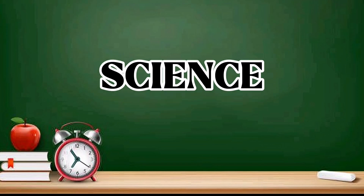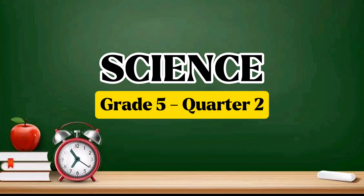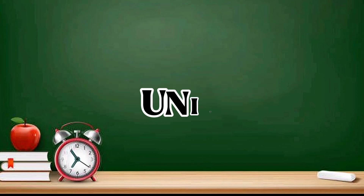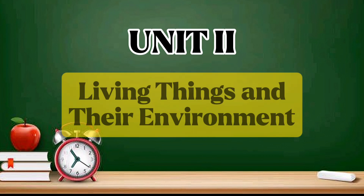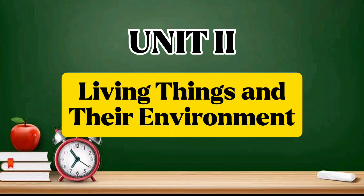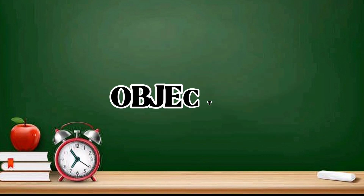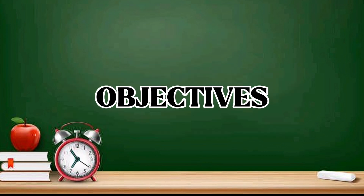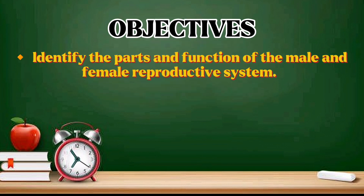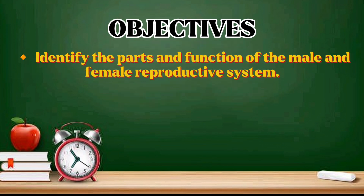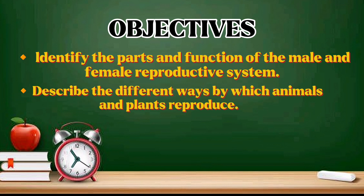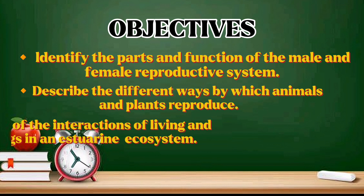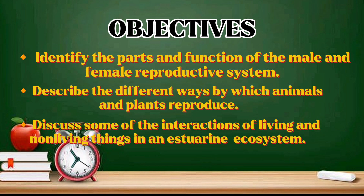Science Grade 5, Quarter 2, Unit 2: Living Things and Their Environment. Objectives: identify the parts and functions of the male and female reproductive system; describe the different ways by which animals and plants reproduce; discuss some of the interactions of living and non-living things in an estuarine ecosystem.